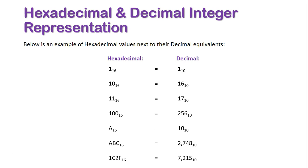And then finally, 1C2F in base 16, which is just a random combination of letters and numbers together, gives us the value of 7,215.